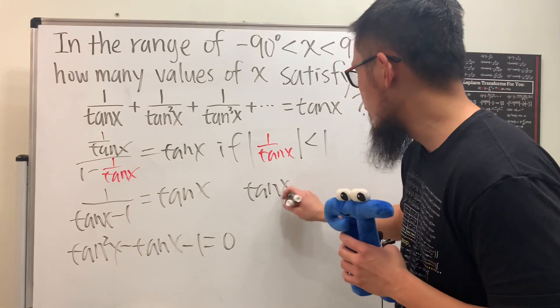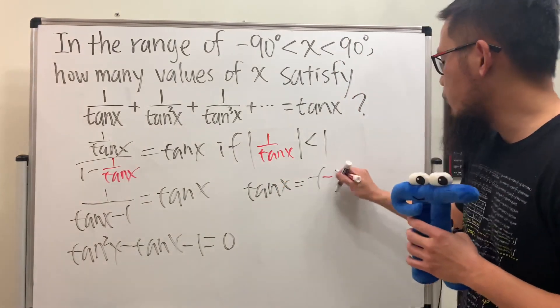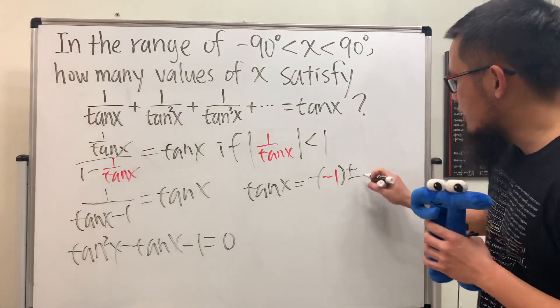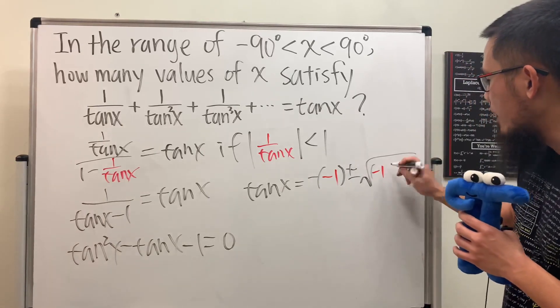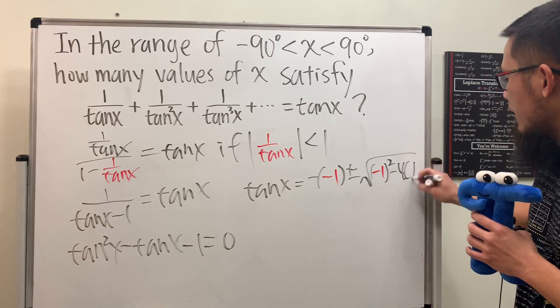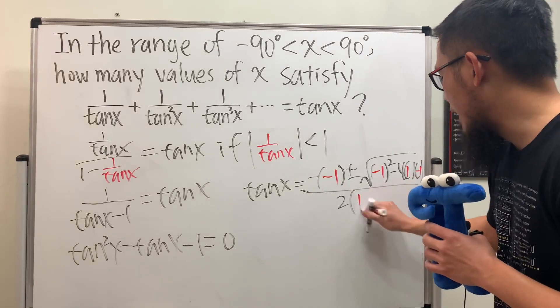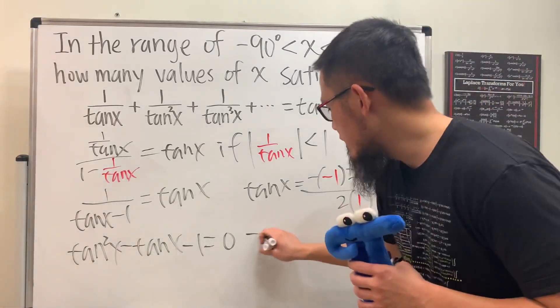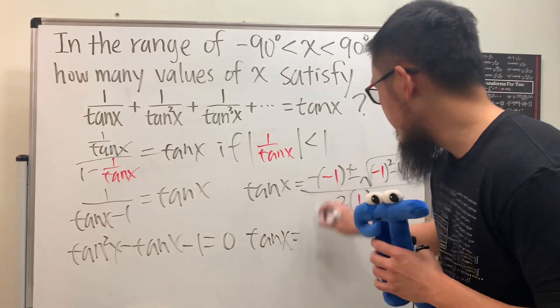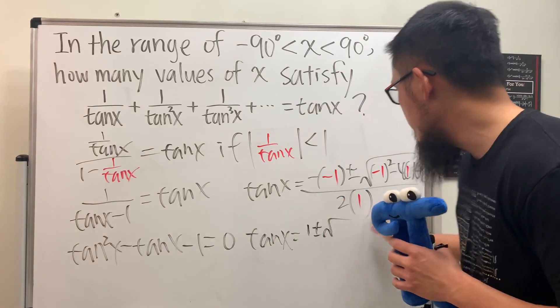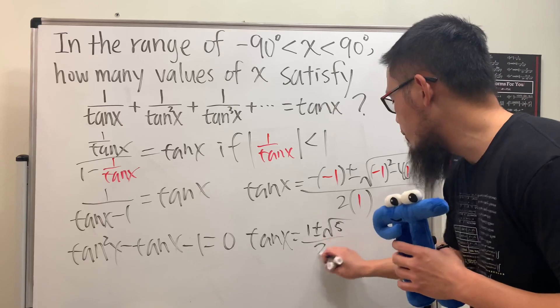So we know tangent x is just going to be negative b, which is negative 1, plus or minus the square root of b squared, which is negative 1 squared, minus 4ac. a is 1, and c is equal to negative 1, all divided by 2 times 1. And as you can see, tangent x is actually just equal to 1 plus or minus square root of 5 over 2.